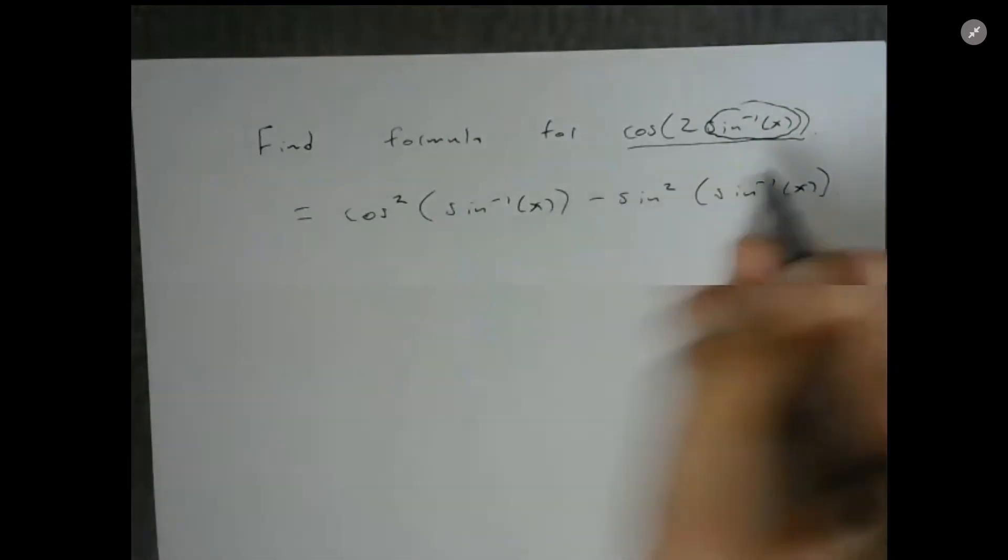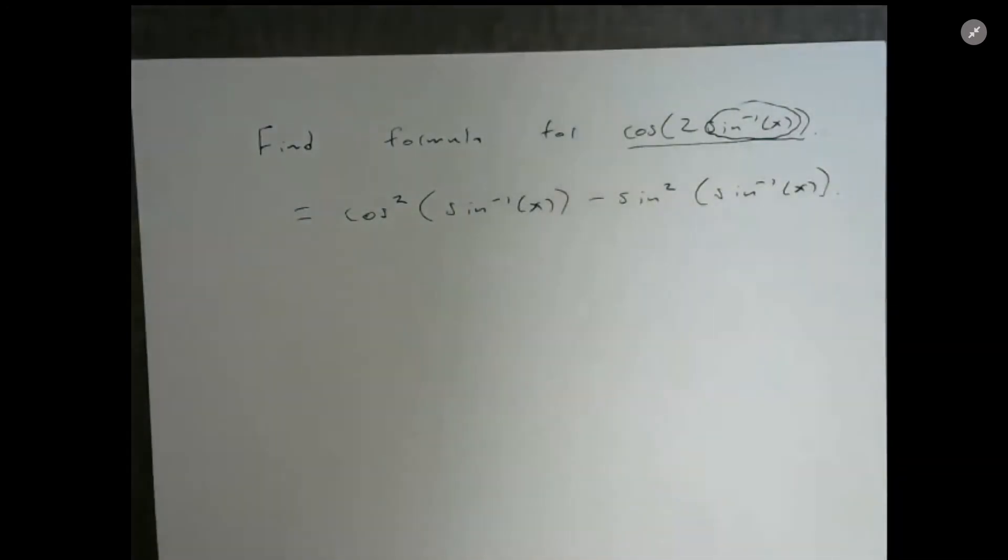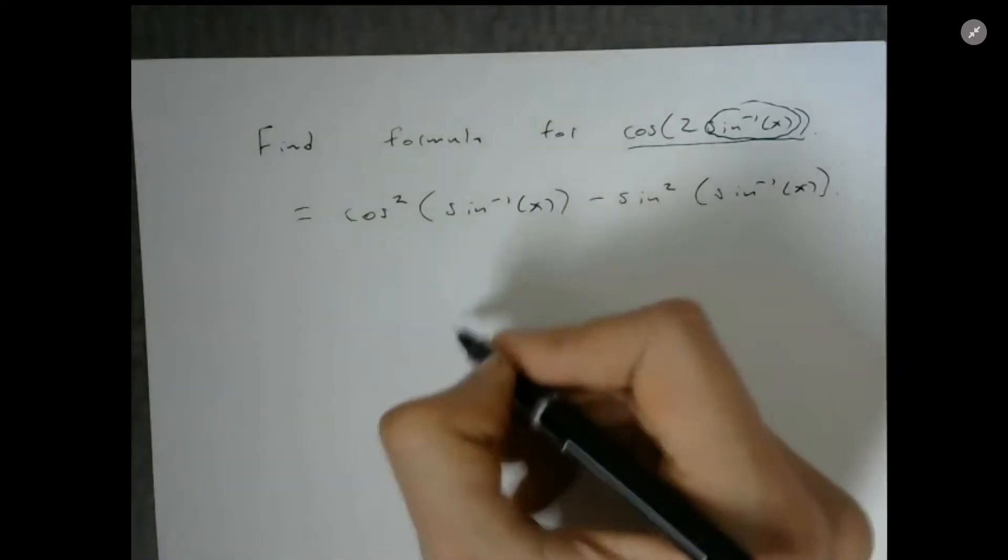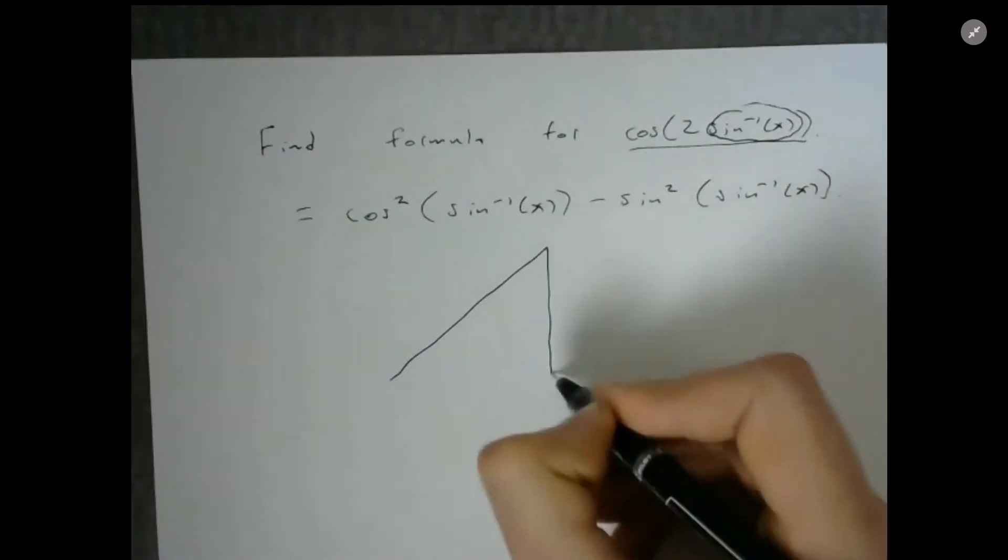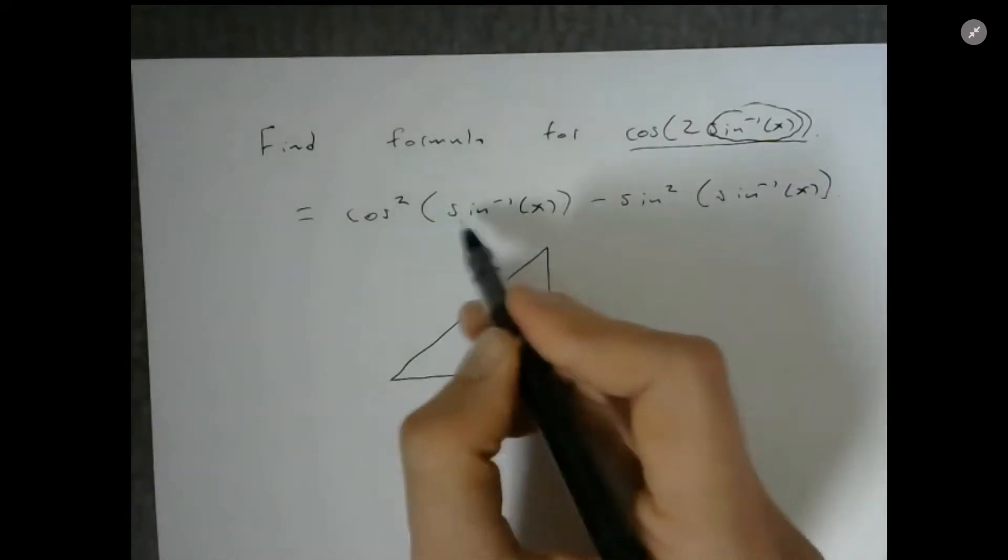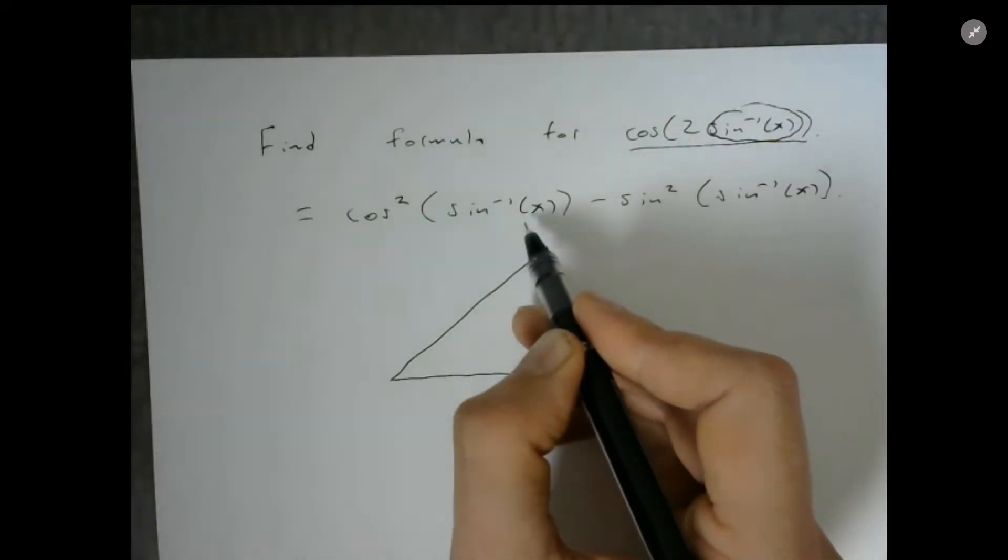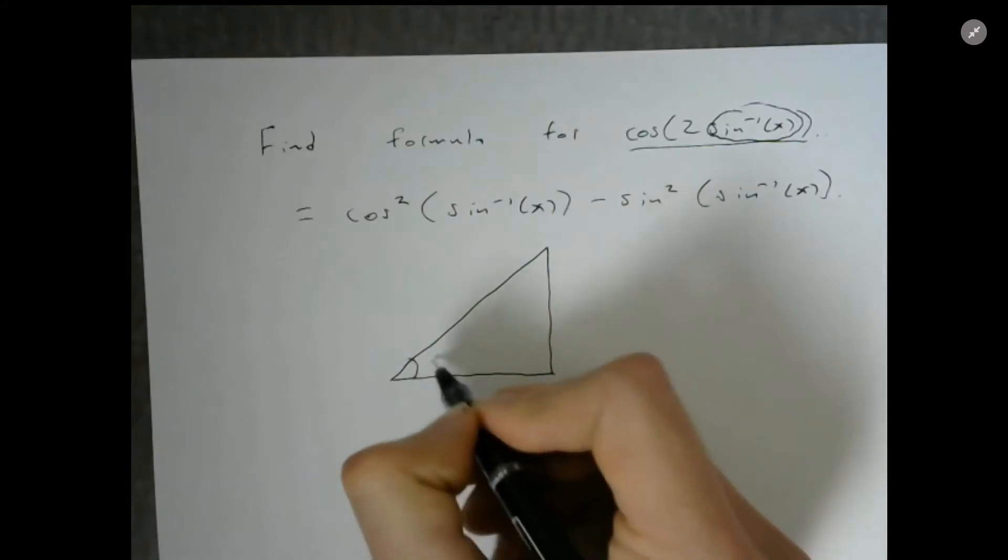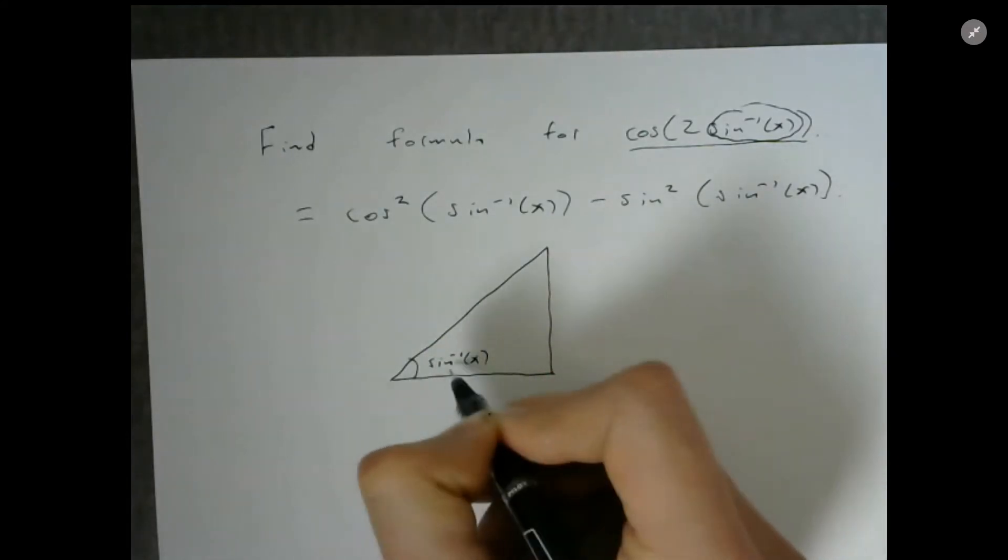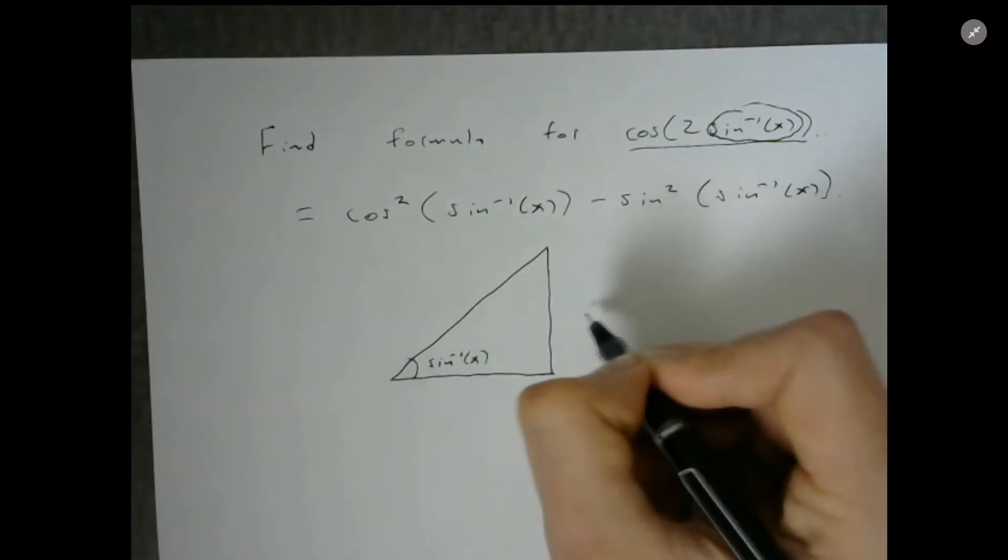So how do we work with this? Well, we want to draw a picture. Here's my triangle, and I know that this sine inverse of x is an angle. Sine inverse of x is this angle, and whatever it is, the sine of this angle is equal to x, and that's the opposite side divided by hypotenuse.